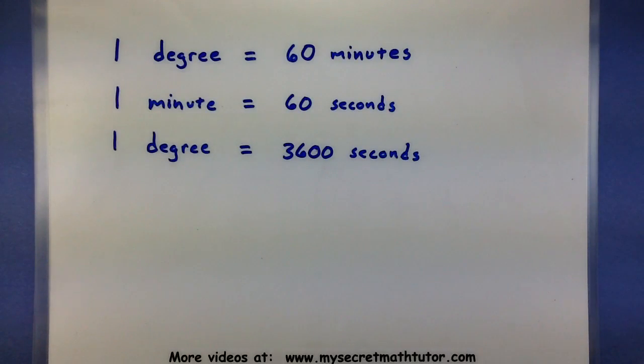One degree is equal to 60 minutes, one minute is equal to 60 seconds, and one degree is 3,600 seconds. By knowing these different units, we can actually do the conversion process fairly easily.